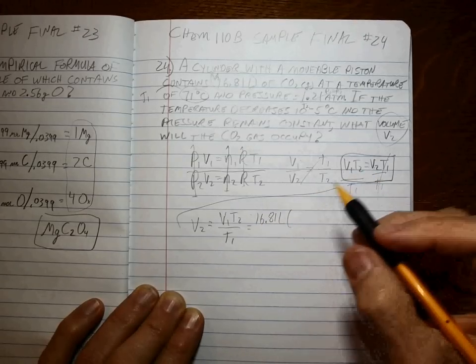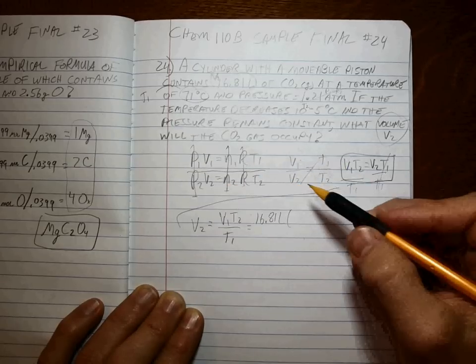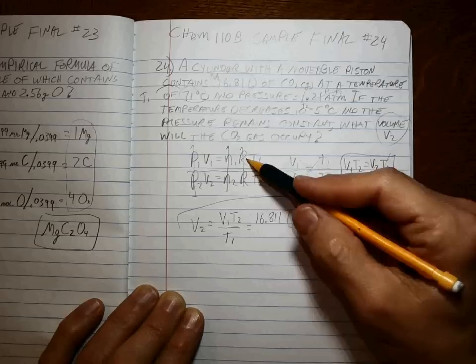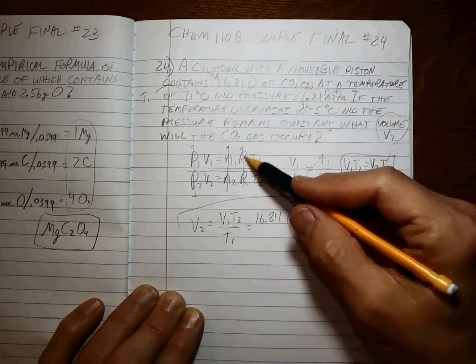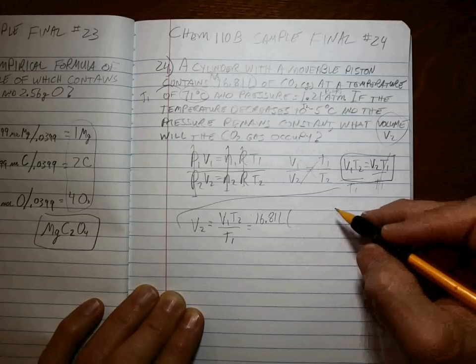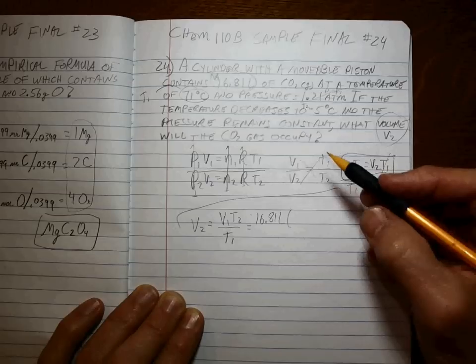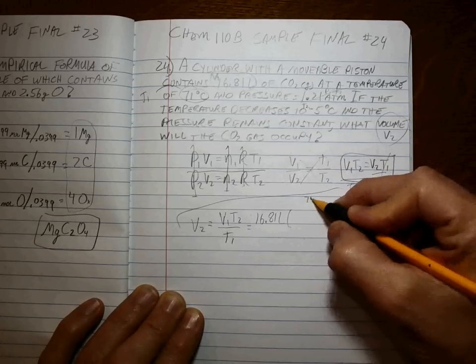What is T2? Remember, if we're doing an ideal gas law, we must use the ideal gas law units. Even though R cancels out, it's still part of the calculation. So those are units of liters, atmospheres, moles, and degrees K.